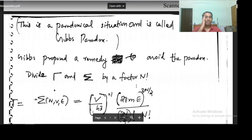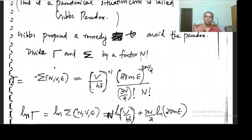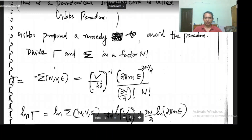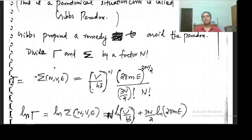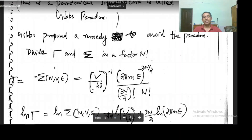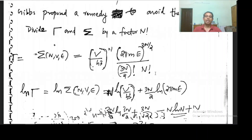Gibbs actually proposed a remedy for this. The remedy proposed by him was: divide gamma or sigma by a factor n factorial. So what we have to do to overcome or avoid the Gibbs paradox is divide gamma or sigma by n factorial.